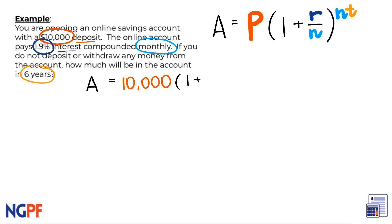Next, we need the interest rate as a decimal. It is provided to us as a percentage of 1.9%, so we can convert it to a decimal by moving the decimal point over twice to the left, which gives us 0.019.